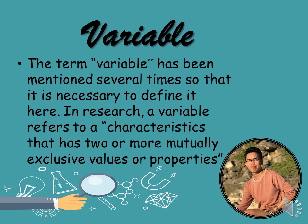Let us begin with the variable first. What is the definition of variable? This definition is based on the book. The term variable has been mentioned several times, so it is necessary to define it here. In research, a variable refers to a characteristic that has two or more mutually exclusive values or properties. A variable is a quantity or quality that varies. It is a defined concept based on the particular study. It could be observed or it could be measured.